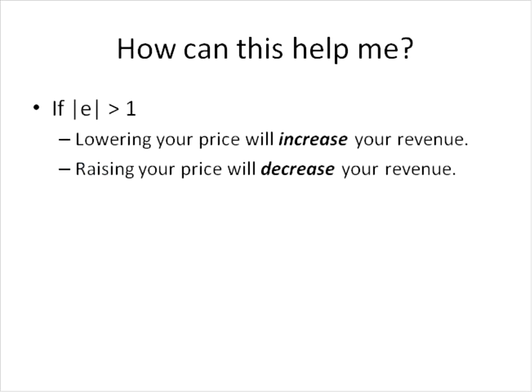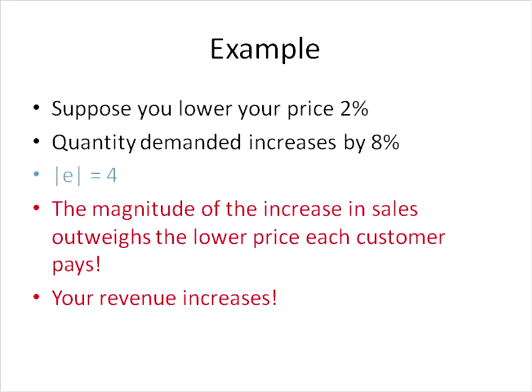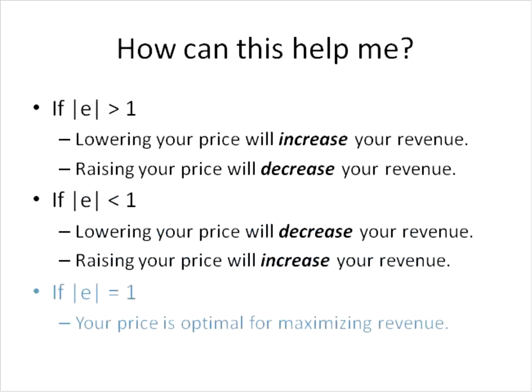So why does this matter? If demand is relatively elastic, then lowering your price increases your revenue, and raising your price will decrease your revenue. Returning to our example where the elasticity coefficient was 4, the magnitude of the increase in sales outweighs the lower price per unit, so revenue increases with the decrease in price. The opposite is true when the coefficient is less than 1 — lowering price decreases revenue, and increasing price increases revenue. And if the coefficient equals 1, you are maximizing your revenue at the price you are currently charging.